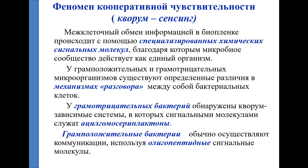Межклеточный обмен информацией в биопленке происходит с помощью специальных химических сигнальных молекул, благодаря которым микробное сообщество действует как единый организм. У грамотрицательных и грамположительных микроорганизмов существуют различия в механизмах этой коммуникации: у грамотрицательных бактерий сигнальными молекулами служат ацилгомосерин лактоны, а у грамположительных бактерий — олигопептидные сигнальные системы.